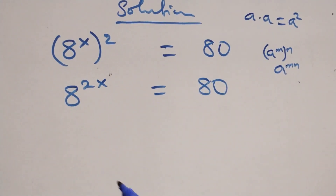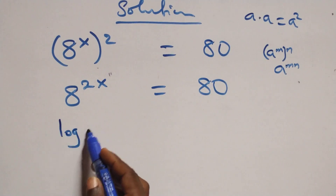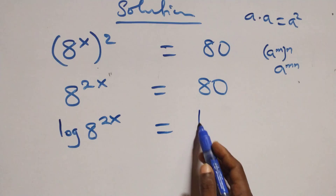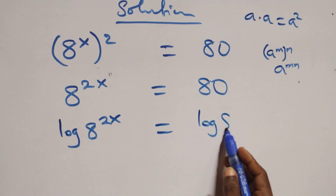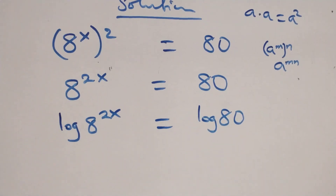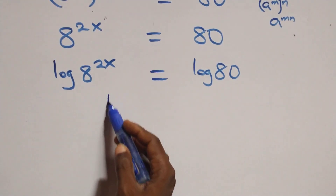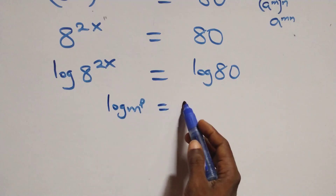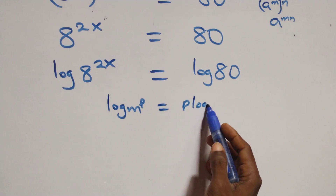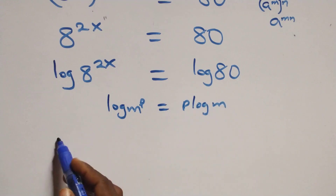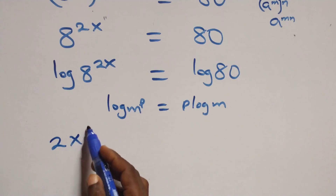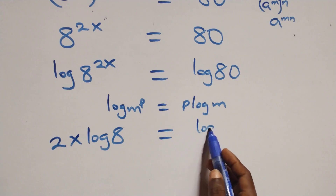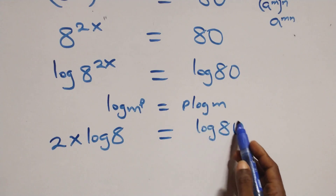The next step: we take the log on both sides. Here we have log of a raised to power 2x equals to log 80. Then we apply the power rule of logarithms: log of m raised to power p is the same thing as p times log m. So we have 2x times log a equals to log 80.